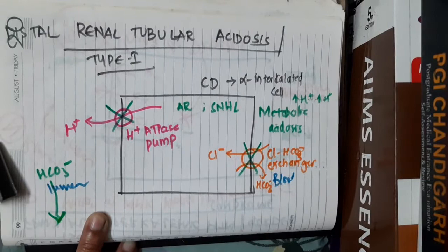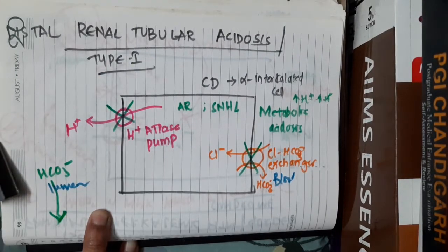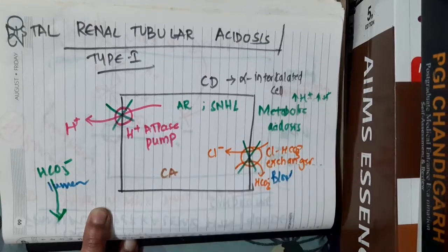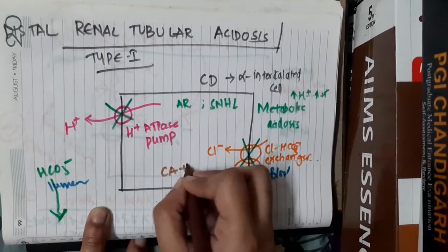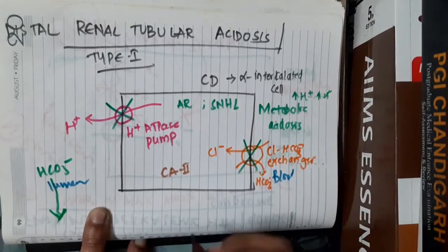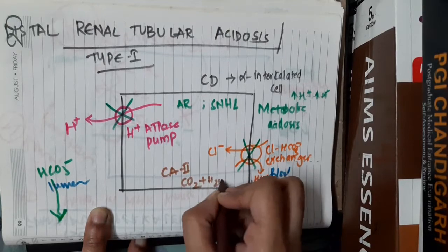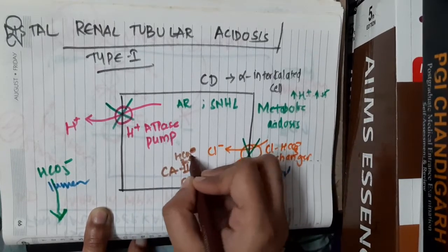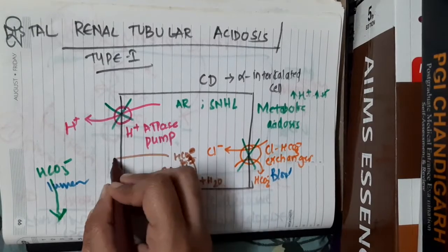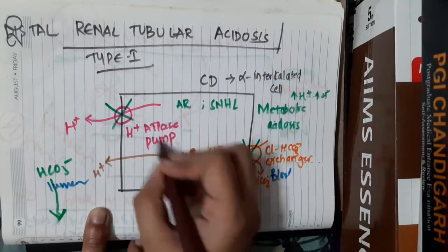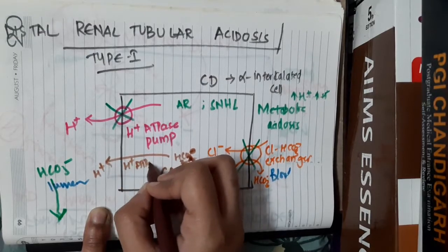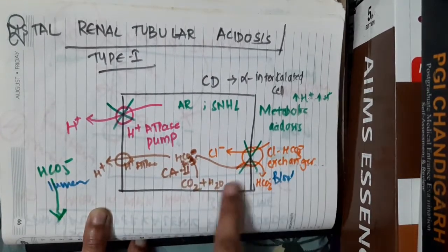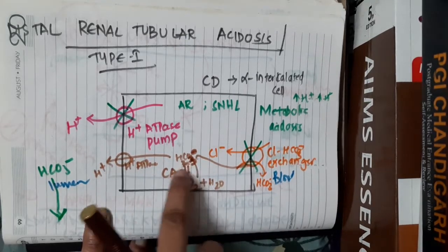The third mutation affecting renal tubular acidosis is a mutation in the carbonic anhydrase gene. Normally, carbonic anhydrase 2 enzyme in the collecting duct combines CO2 and H2O to form H2CO3 (carbonic acid), which dissociates to provide H+ ions excreted via the H+ ATPase pump, and bicarbonate reabsorbed via the chloride-bicarbonate exchanger.